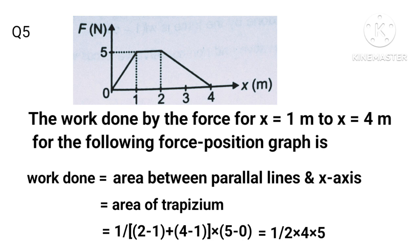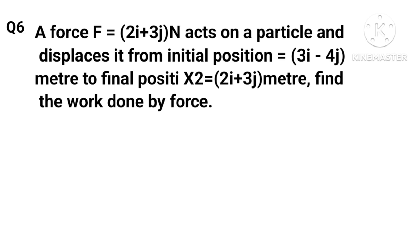A force F = 2i + 3j acts on a particle and displaces it from initial position OA = 3i - 4j meters to final position OB = 2i + 3j meters. Find the work done by the force.